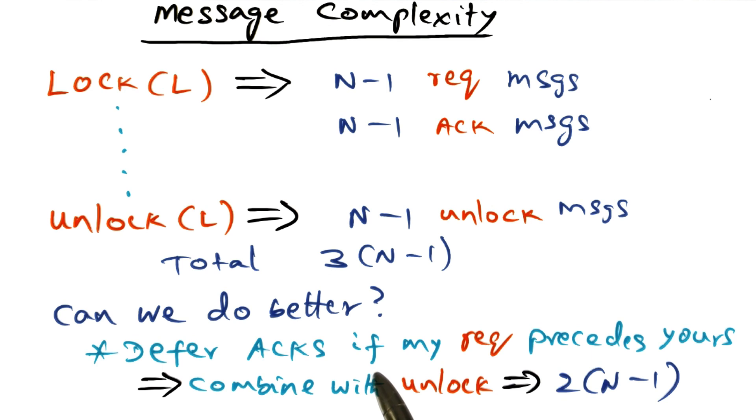So in other words, we can defer the acknowledgments if my lock request precedes my peers' lock request. So we are combining the acknowledgment for a lock request with the unlock. So if I do that, then I can bring the message complexity down to 2 times n minus 1.